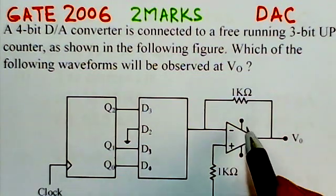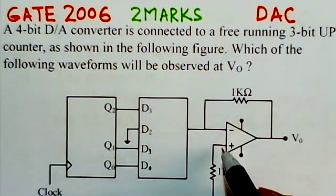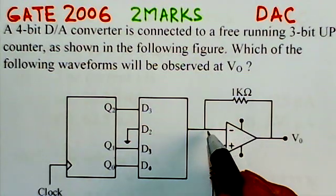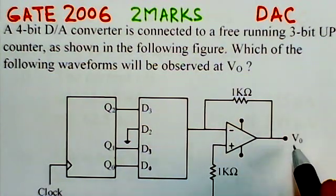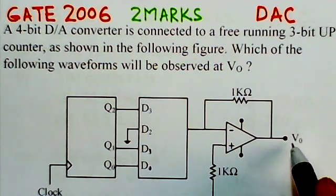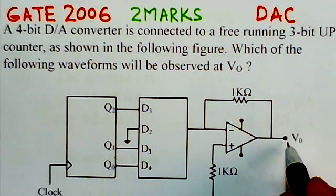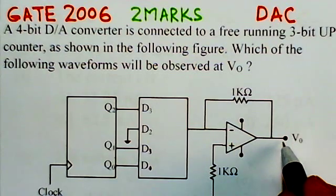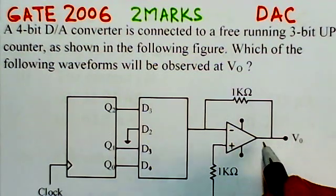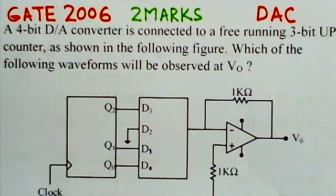At the output, if we observe, there's an operational amplifier working in inverting mode, and this is the output V0 taken from the operational amplifier. We have to see what will be the corresponding waveform that will be observed at the output of this circuit.